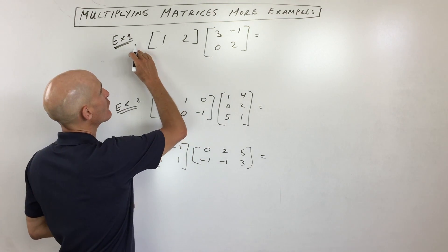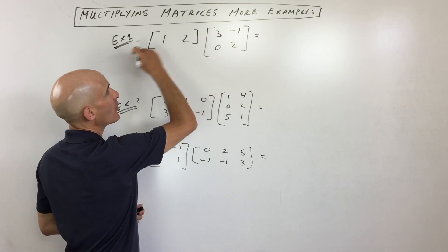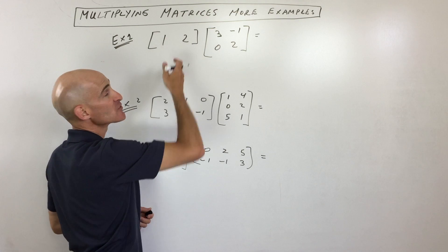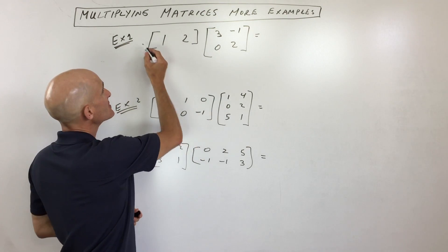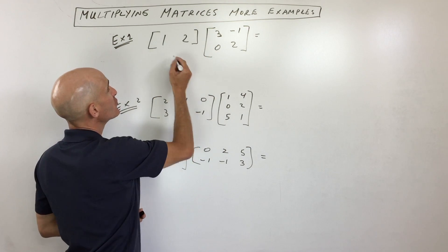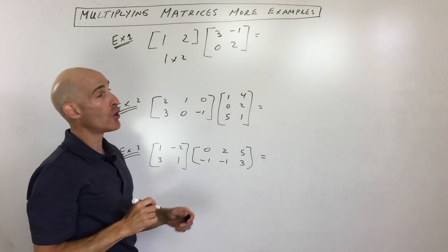The way that you do this is you look at the number of rows, which go horizontally, and the number of columns, which go vertically. So this is a one row, two column matrix. So I'm going to write one by two right below it.